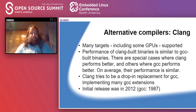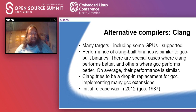Clang was initially released in 2012, so it's about eight years old. It doesn't have to care about all the old standards that gcc keeps carrying around — it was built on a more modern base. But it also has to catch up on a couple of things that gcc has been doing for almost 40 years longer.